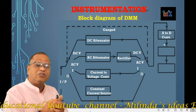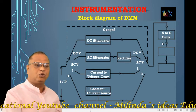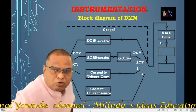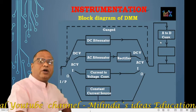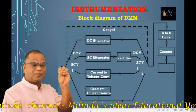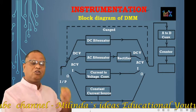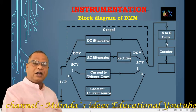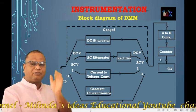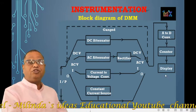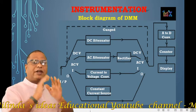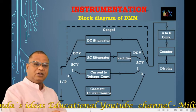So it is an A to D converter. The next block is a counter, and the final block is the display, which gives a visual indication of our input parameters. So this is the block diagram of the digital multimeter.